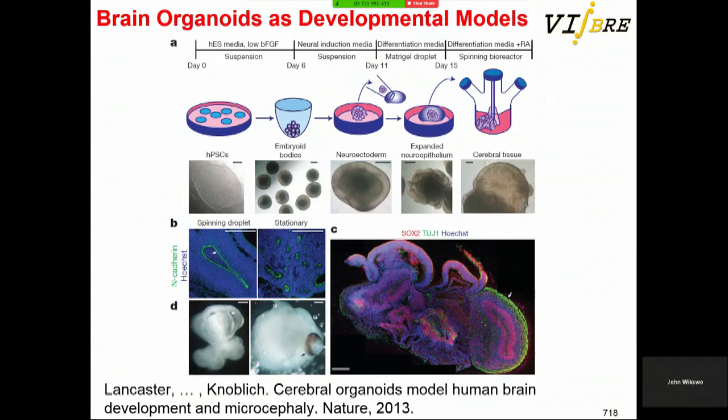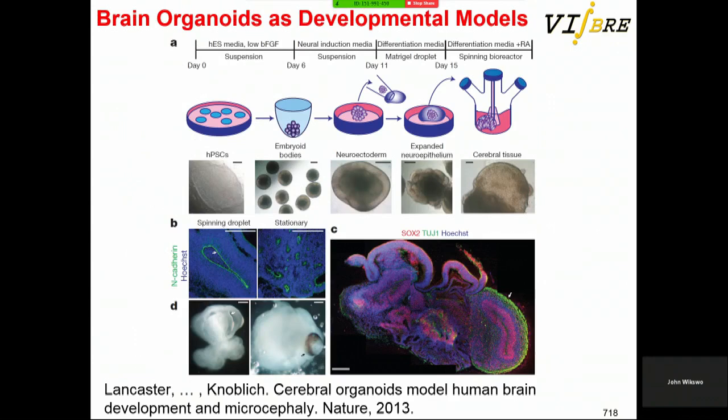It's extremely important to study organoids in this context. Organoids are self-assembling systems where you take some cells, allow them to undergo differentiation and self-assembly. We cannot ignore organoids.